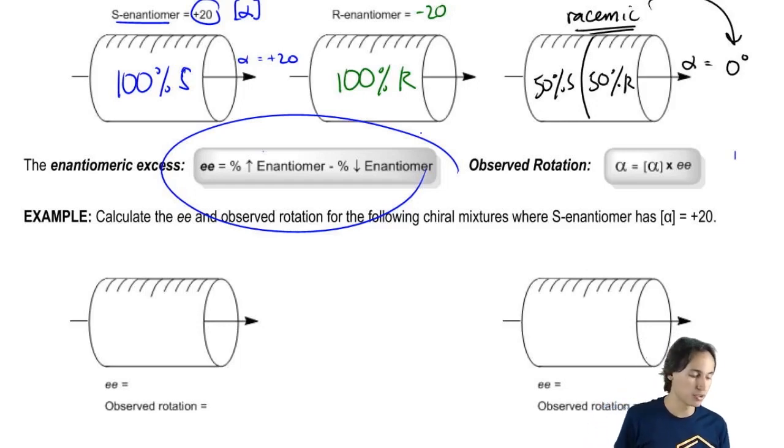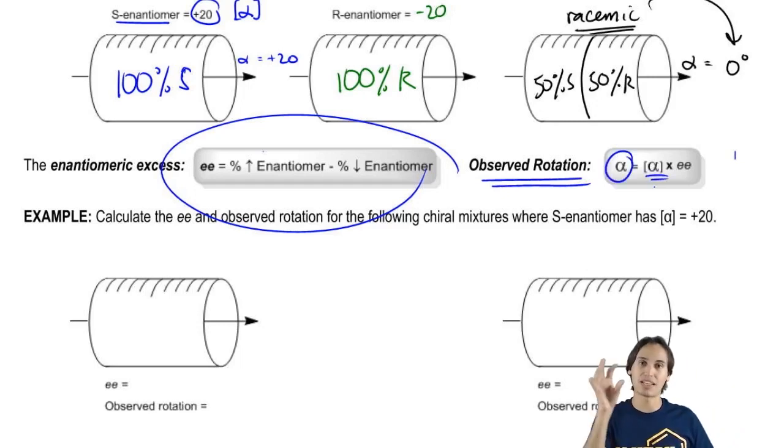So if we ever want to calculate observed rotation, it's actually really easy. All we do is say observed rotation, or alpha, equals the specific rotation, meaning the amount that that molecule would theoretically produce at 100%, times the enantiomeric excess, which is actually the optically active part because it's the part that isn't canceled out by anything else.